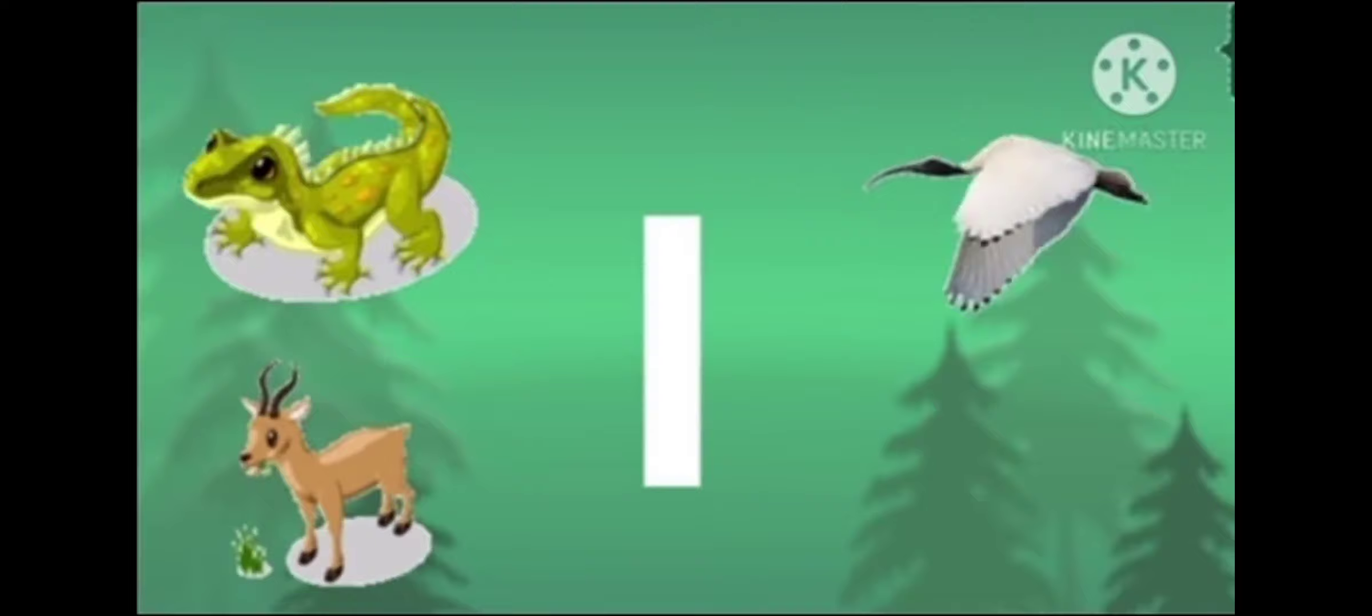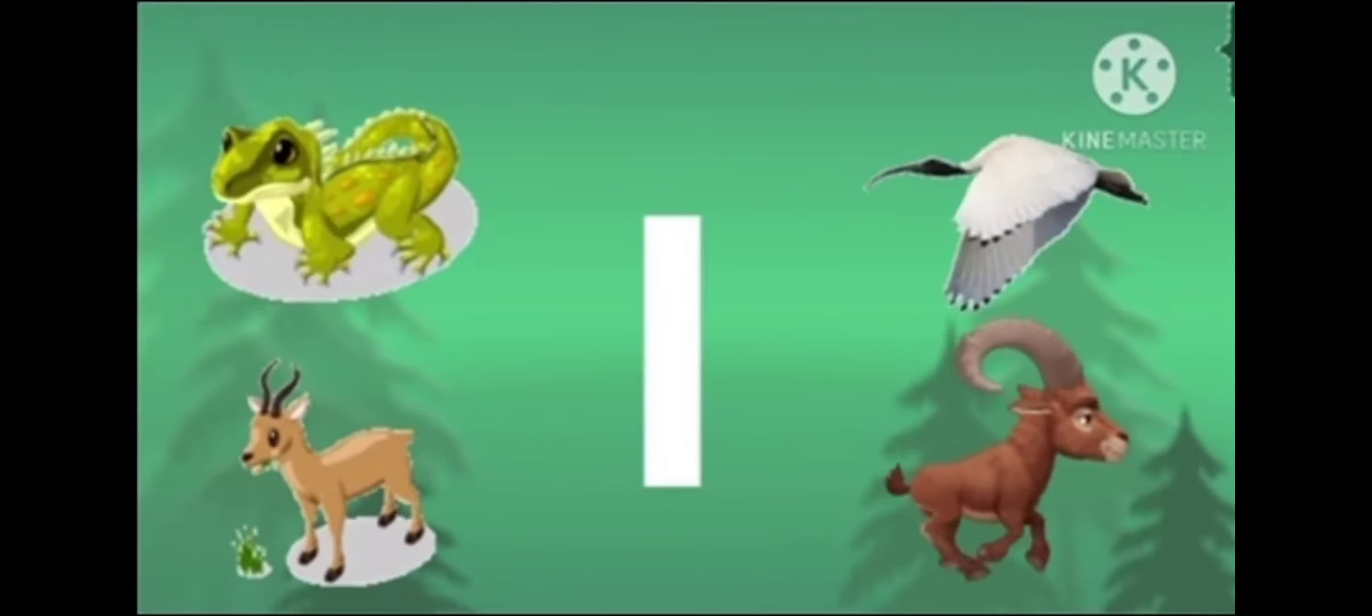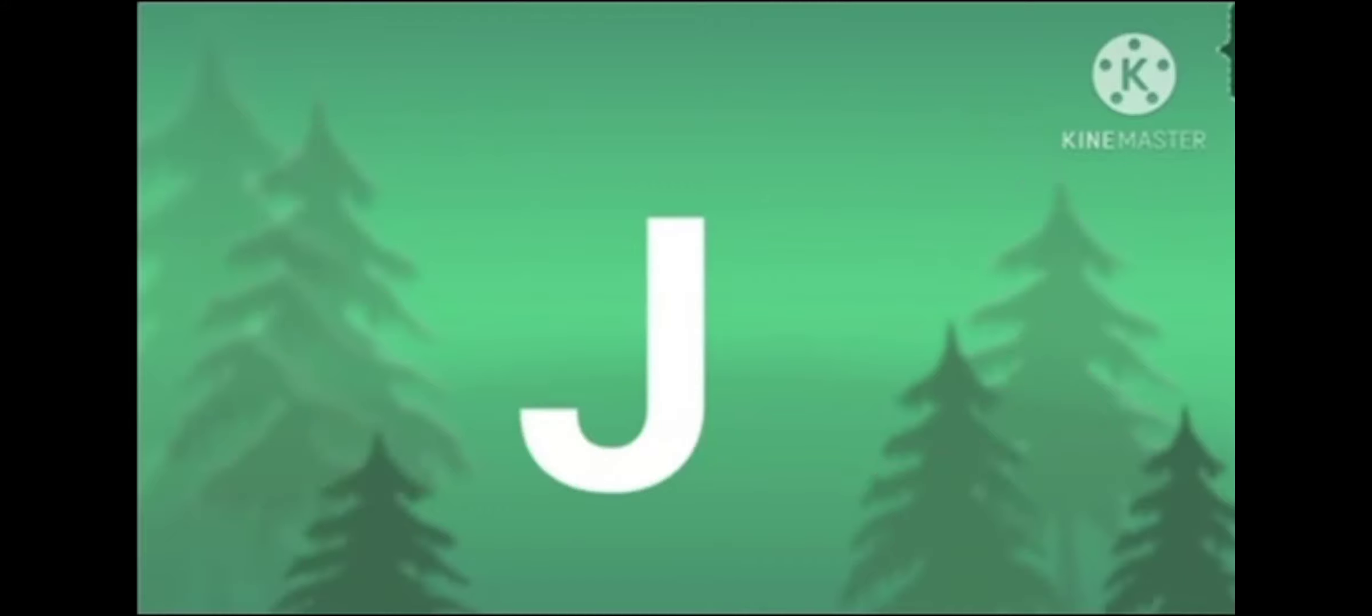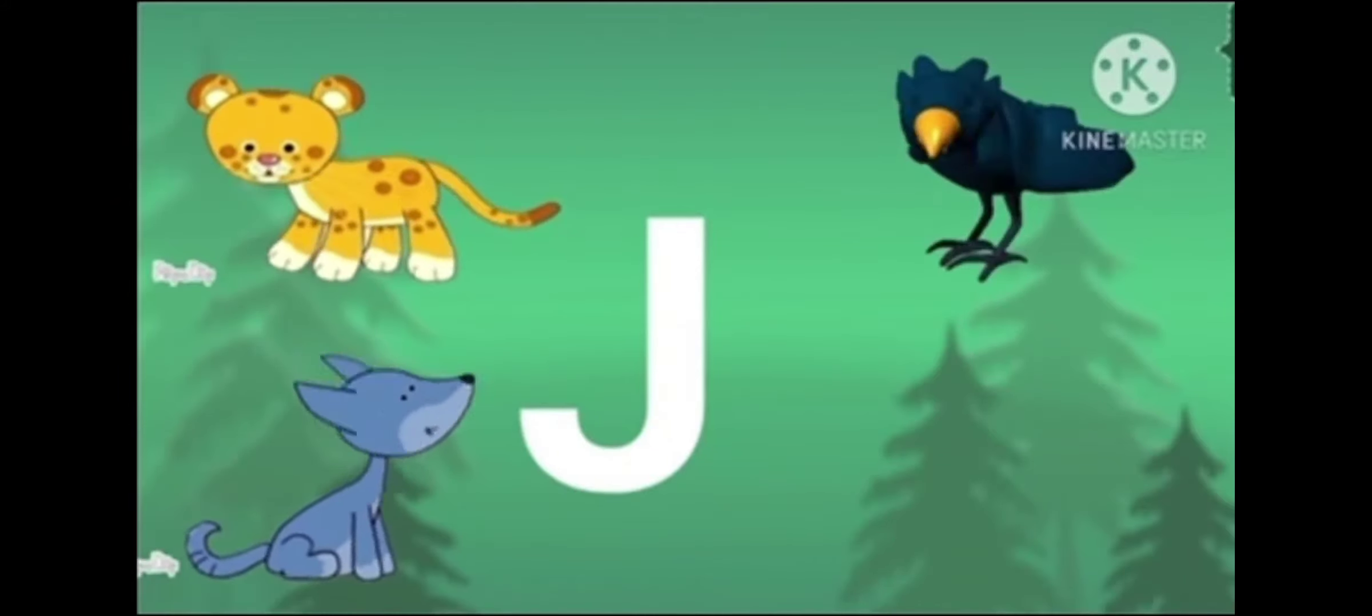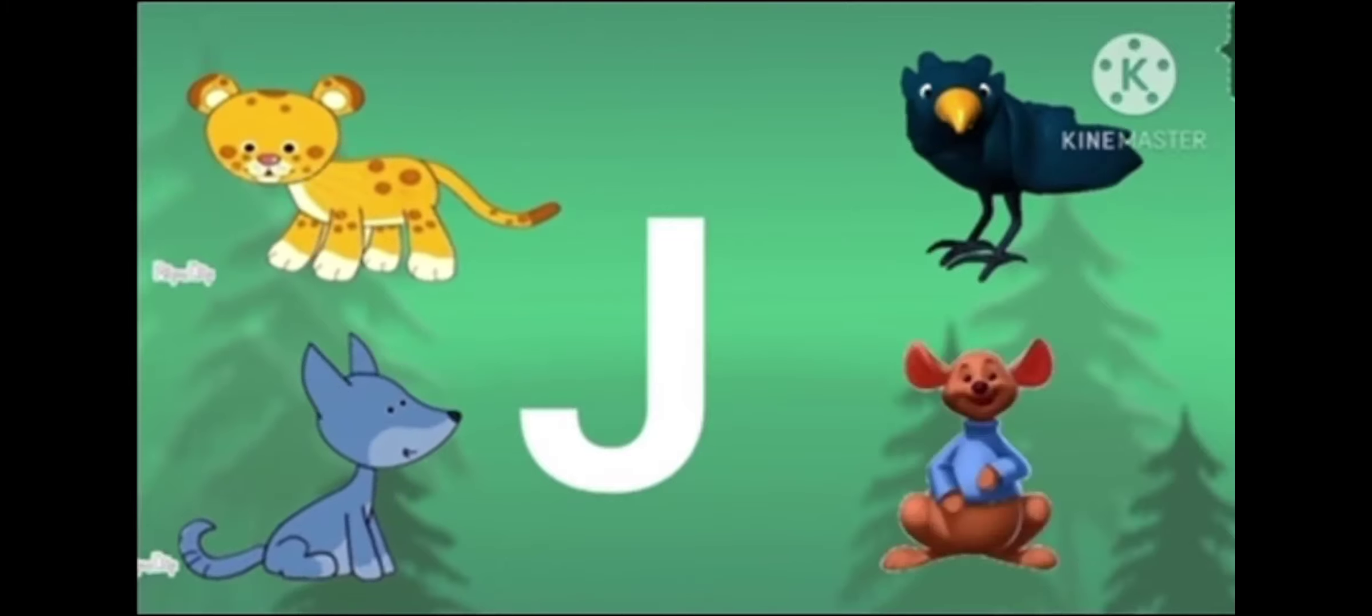I is for iguana, ibis and impala. I is for ibex, the wild mountain goat. J is for jaguar, jackal and jackdaw. J is for joey, a baby kangaroo.